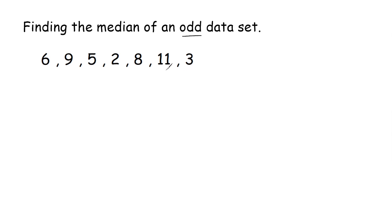So the first thing that we have to do when finding the median is order our data set from least to greatest. So two is the smallest and then we have three and we have five and we have six and then we have eight and our last two numbers are nine and eleven.